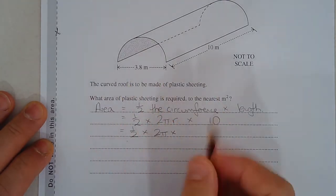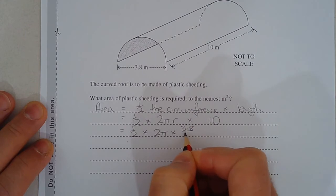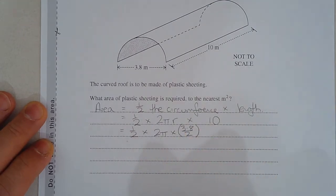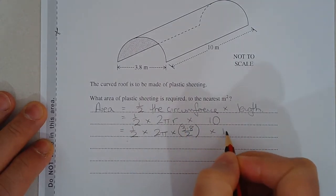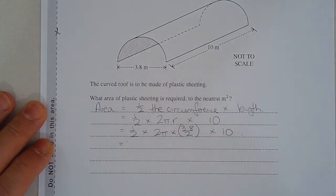Times. Now that's going to be 3.8 over 2. So that gives us the radius of the circle and then we're going to multiply that by the length. Now let's enter that all in.